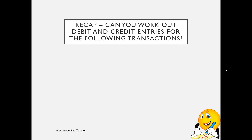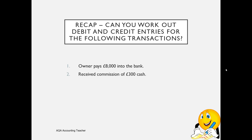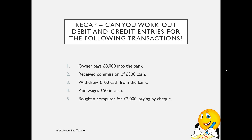Can you work out the debit and credit entries for the following transactions? I'm going to put these up on the screen — I suggest you pause the video and think through what would be the debit and what would be the credit, and then we'll look at the answers. Transaction one: owner pays £8,000 into the bank. Number two: received commission of £300 in cash. Number three: withdrew £100 from the bank in cash. Number four: paid wages of £50 in cash. Number five: bought a computer for £2,000 paying by cheque. Pause the video now, write down your answers, then continue to check them.